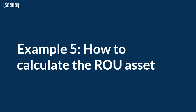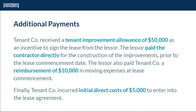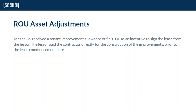Next, we'll go over example five: how to calculate the right of use asset. To calculate the right of use asset, we need to review some additional payments from the scenario. Tenetco received a tenant improvement allowance of $50,000 as an incentive — the lessor paid that amount directly to the contractor for construction of improvements, all prior to the lease commencement date. The lessor also paid Tenetco $10,000 to reimburse them for moving expenses at lease commencement. Finally, Tenetco incurred initial direct costs of $5,000 to enter into the lease agreement.